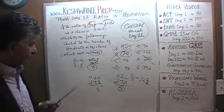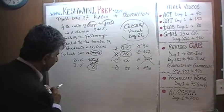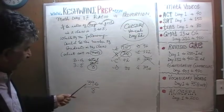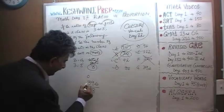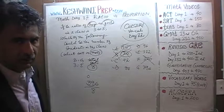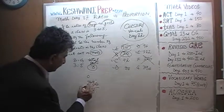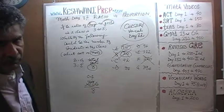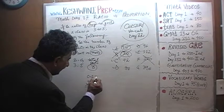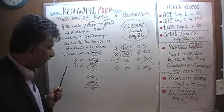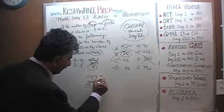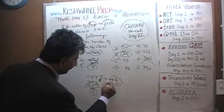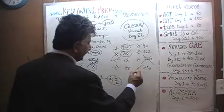Let's check 396. 3 has no 8s, so it joins the 9 to make 39. 39 has four 8s (32); the remaining 7 joins the 6 to make 76. 76 has nine 8s (72), leaving a remainder of 4. That 4 divided by 8 gives 49 and a half, so it is not possible to have 396 students in the class.